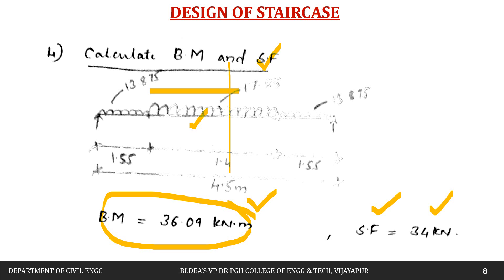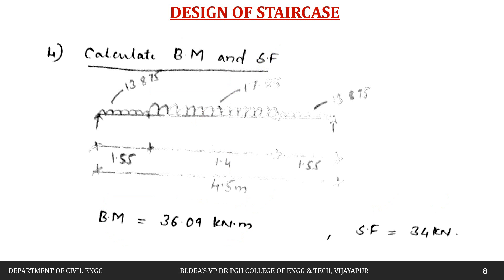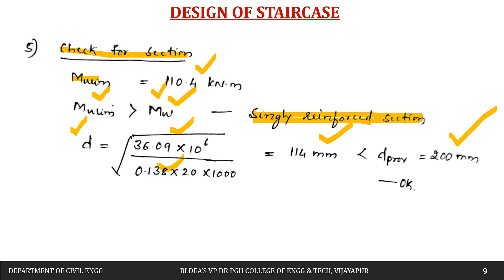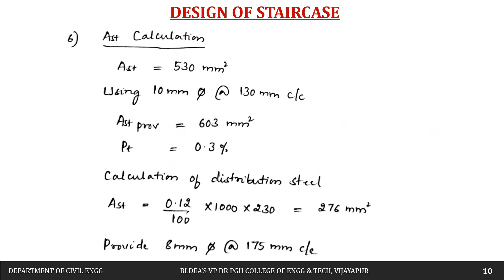Before providing reinforcement, we check whether the section is within limits. The limiting moment is 0.138 × fck × b × d² = 110 kN·m, which is greater than the applied moment of 36.09 kN·m, so we design it as a singly reinforced section. The depth required equals √(Mu / (0.138 × fck × b)) = 114 mm. Since the provided effective depth is 200 mm, the depth criteria is satisfied.